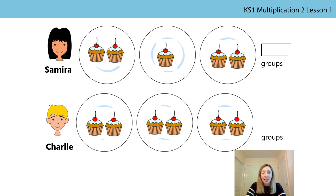Samira and Charlie have some cupcakes and the cupcakes have been grouped. Can you see the groups of cupcakes? What do you notice about Samira's and Charlie's cupcakes? Press pause and have a little think — what's the same and what's different? They've both got three groups of cupcakes. Does Samira have the same or a different number of cupcakes in each of her groups? She has a different number of cupcakes in each group — one of her groups hasn't got as many as the others. So Samira has unequal groups because she has a different number of cupcakes in each of her groups.